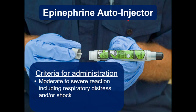Criteria for epi administration: moderate to severe reactions including respiratory distress and shock. That holds true for repeat doses — if they're still having breathing problems and are shocky, or they improve after a dose and then worsen again 20 minutes later, you can give epi again. Check your protocol for whether you need to call medical control, but you should be en route to the hospital anyway.